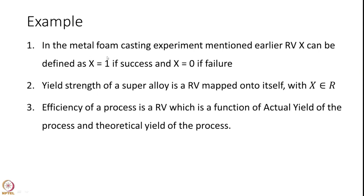In the case of metal casting, if it is a successful experiment we say random variable X equals 1, and if it is a failure we say that the random variable takes a value 0. The yield strength of a superalloy or any metal is a random variable mapped onto itself because yield strength itself is numeric. Efficiency of a process is also a random variable — for example, the ratio of actual yield to theoretical yield of the process.